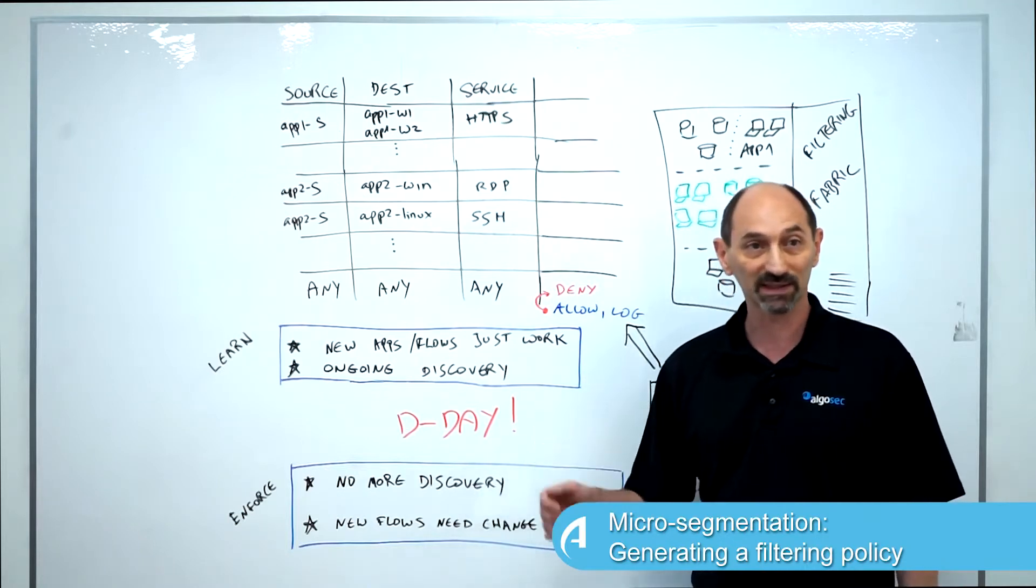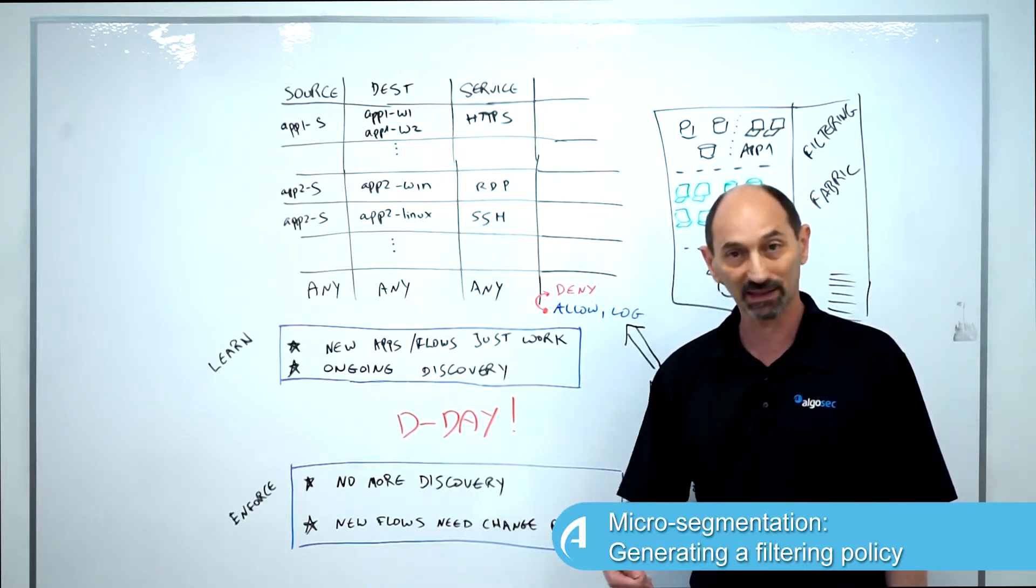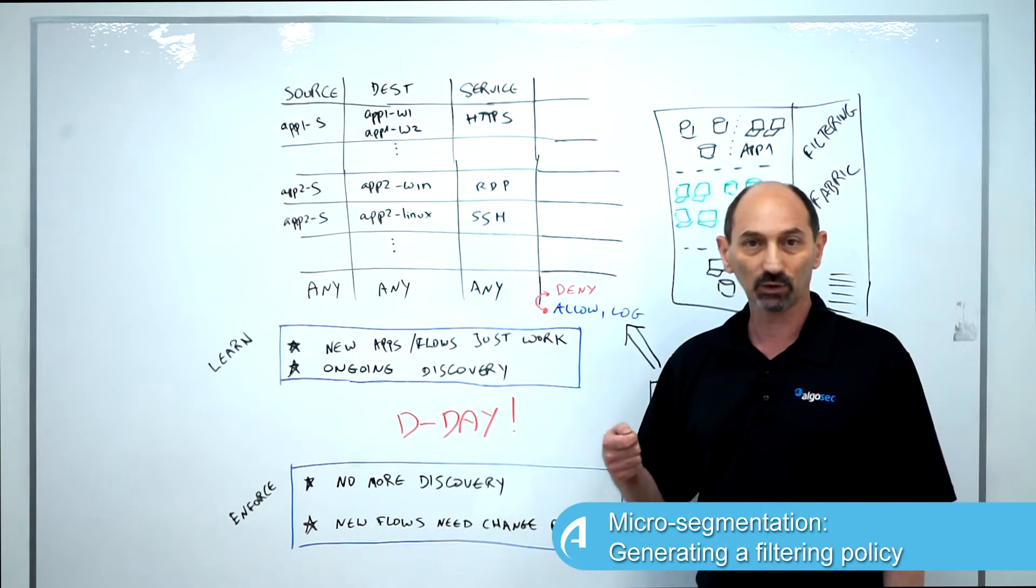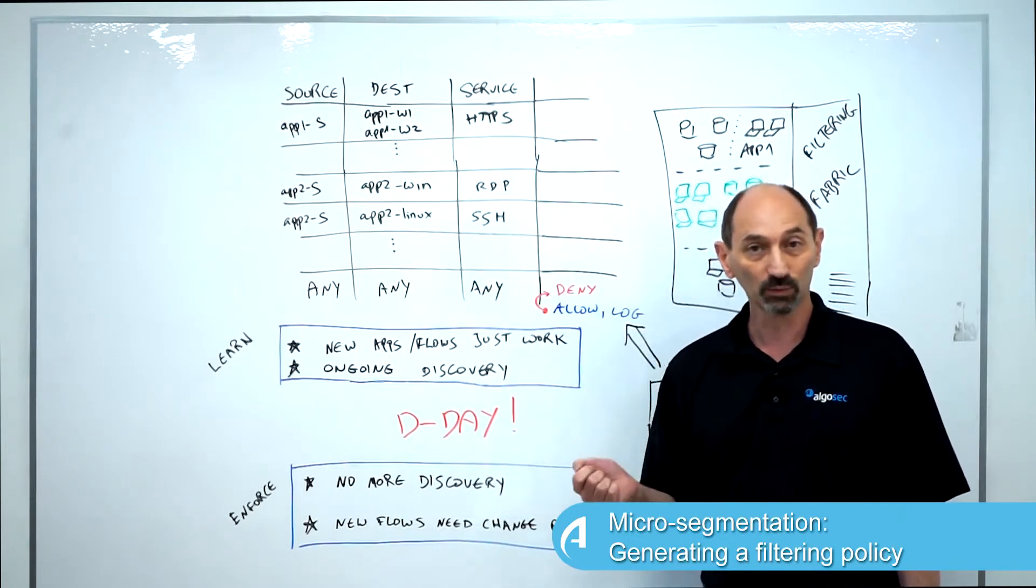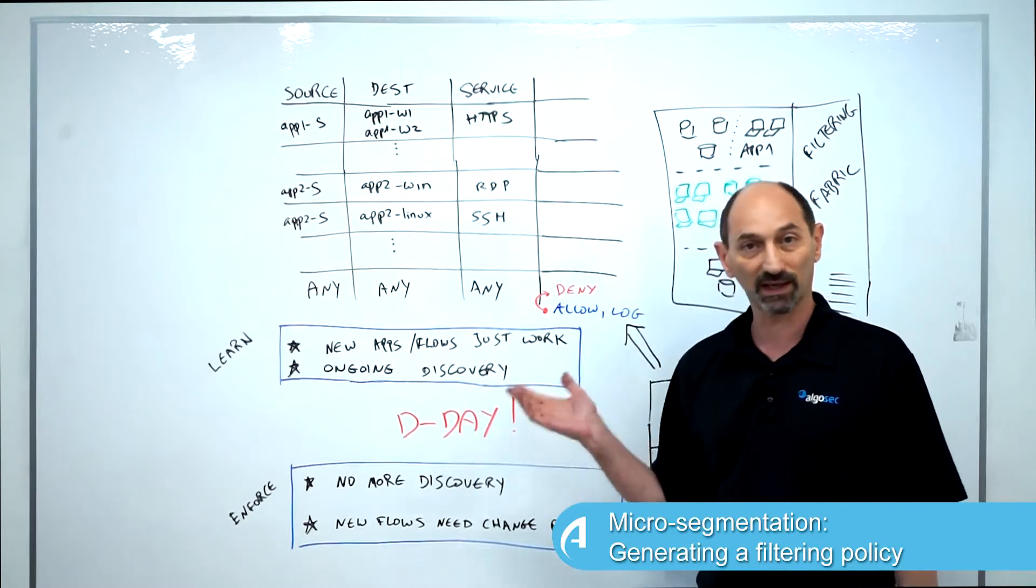Once you've done that, you can actually say that micro-segmentation is in force and you're actually protecting your servers from lateral movement. Before you've done that, you're still at risk.